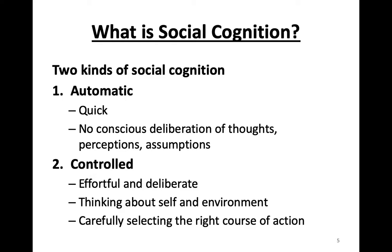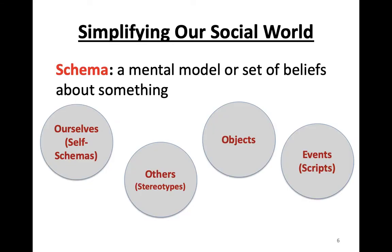These automatic and controlled modes of social cognition work very well together. Our automatic thinking is really like the automatic pilot that flies an airplane, monitoring hundreds of complex systems and adjusting to changes in the atmosphere. The autopilot does fine most of the time, although occasionally it's important for the human pilot to take over and fly manually. Most of the time we're running on automatic pilot when we monitor our environments, draw conclusions, and direct our behavior, but we also have the ability to override our automatic thinking and analyze situations more slowly and deliberately.